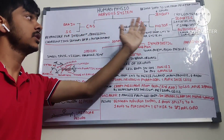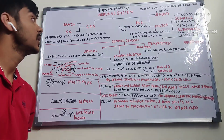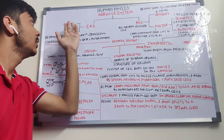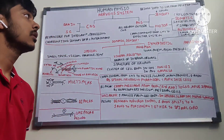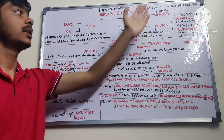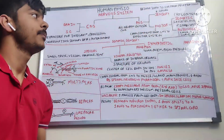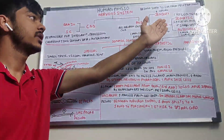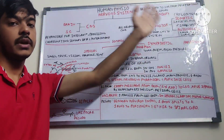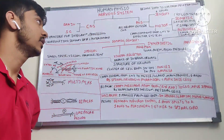We'll start with the nervous system, which is divided into CNS and PNS — that is the central nervous system and the peripheral nervous system. The central nervous system consists of the brain and the spinal cord, whereas the peripheral nervous system has two divisions: sensory and motor. The motor division is again divided into somatic and autonomic, and the autonomic is divided into sympathetic and parasympathetic nervous system.